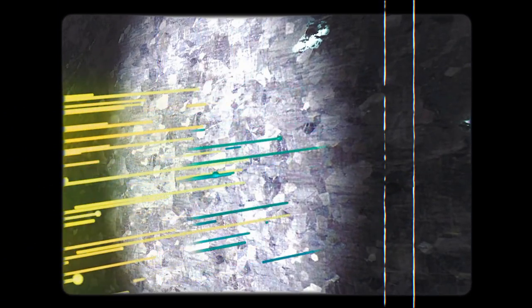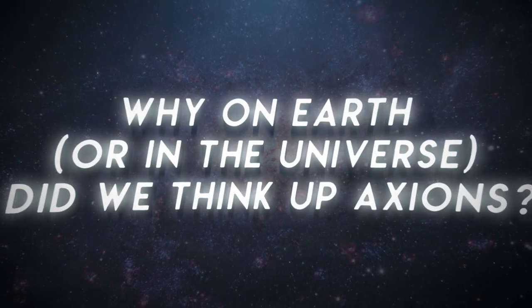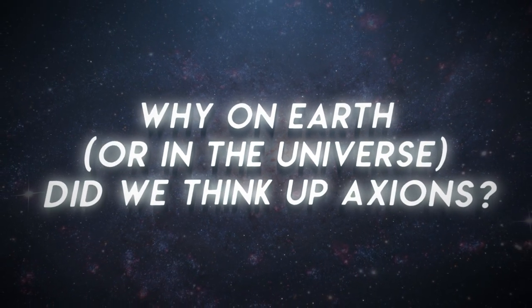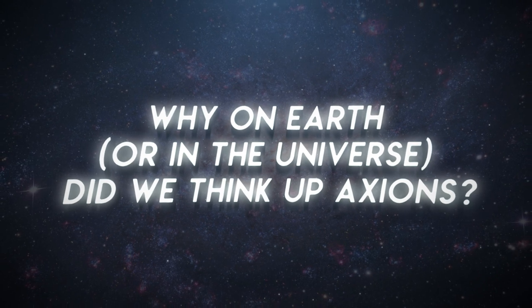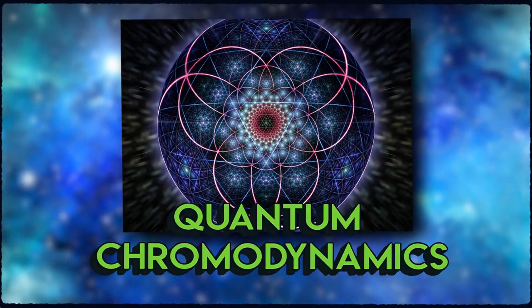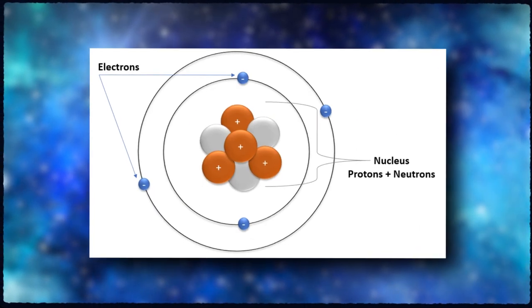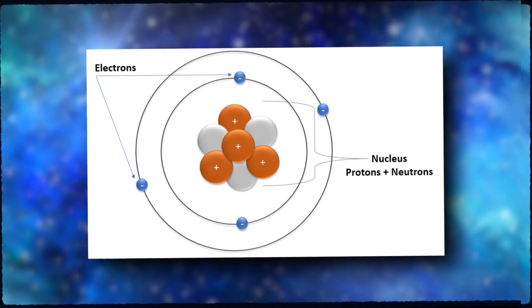But the thing is, if axions are real, they're breezing through you, me, our planet, and the stars all the time without us even noticing. Now, you might ask, why on Earth, or in the universe, did we think up axions? Well, they're the product of something called quantum chromodynamics, the physics theory that describes the antics of quarks and gluons, those tiny particles inside protons and neutrons.